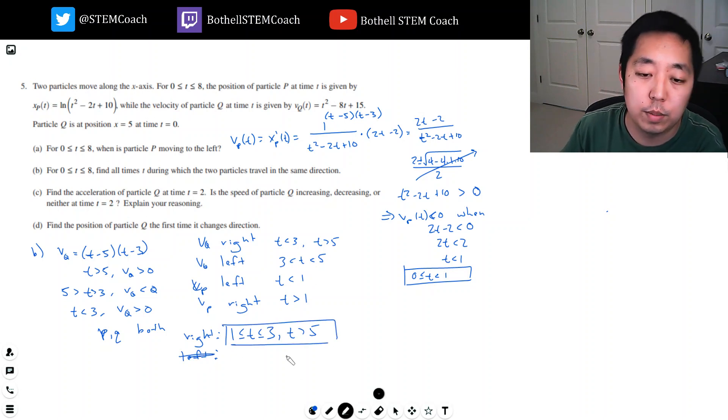Now vp is going to the left when t is less than 1, and vp goes to the right when t is greater than 1. So what's the overlap here? They're both going to the right between 1 and 3. And then also when t is greater than 5. And they're both moving to the left. See, vp is only to the left when t is less than 1. And vq is going to the left... they're never both going to the left at the same time. So it's only these intervals. They're never going left at the same time. Okay, so that's that one. That was a little bit of a tricky question.